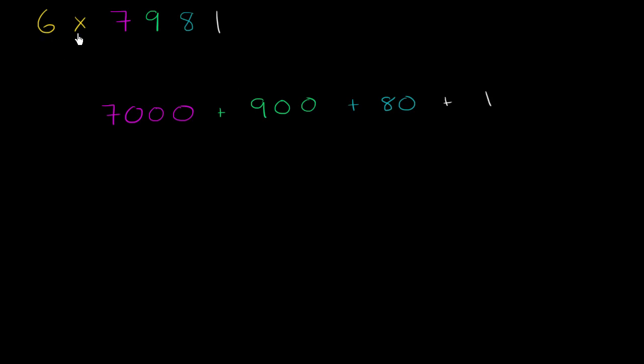And so multiplying 6 times 7,981 is the same thing as multiplying 6 times 7,000 plus 6 times 900 plus 6 times 80 plus 6 times 1. You would essentially distribute the 6.